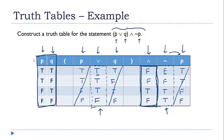This is the end of this presentation. In the next one in the series, we'll look at how we can use truth tables to answer that original question: how can we tell when two logical statements are equivalent to each other?